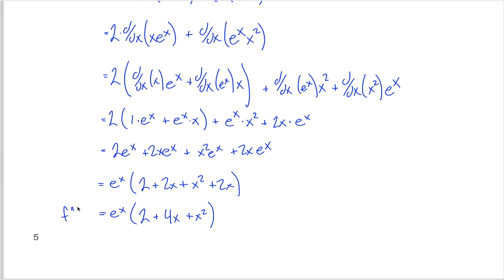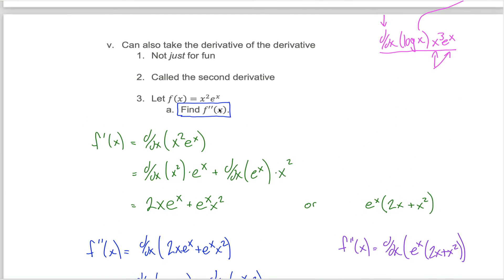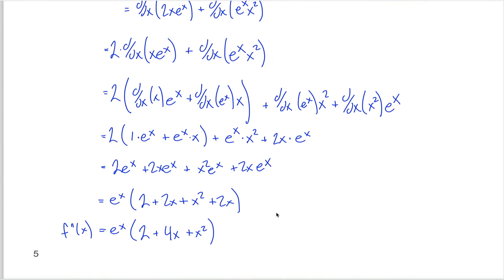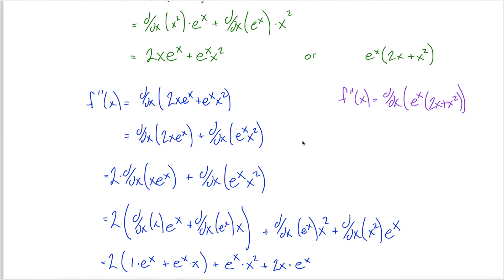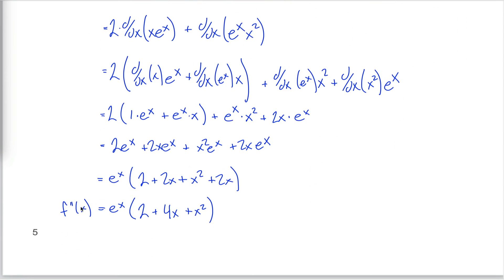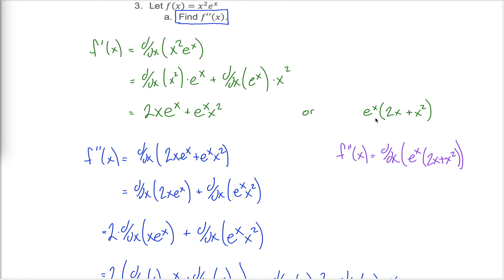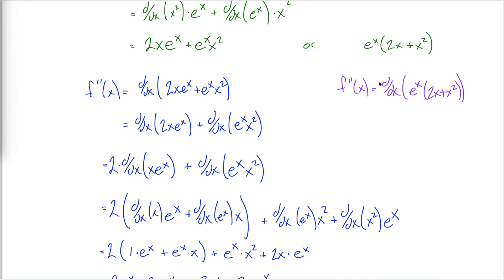And as long as we've come this far, we might as well do one more step and recognize we've got 2x over here and 2x over here, so really we have 4x: 2 plus 4x plus x squared. This is the second derivative of this function f of x. Kind of a mess, but if you can follow all those steps I can confidently say that you're something of an expert on the product rule. Before ending this video, let me show you one more thing.